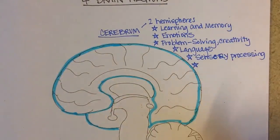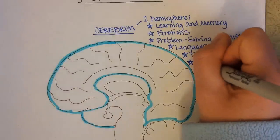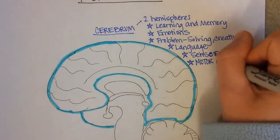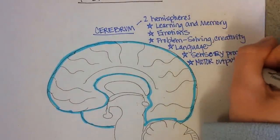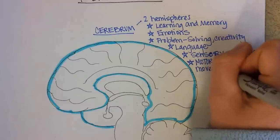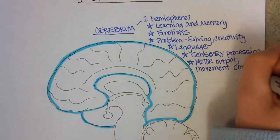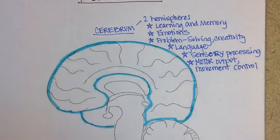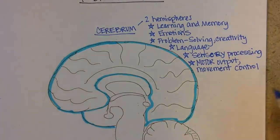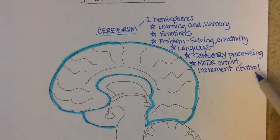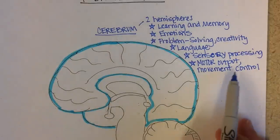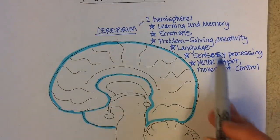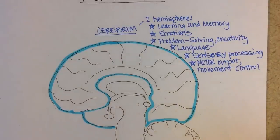Also in the cerebrum, motor output or movement control. So especially from this area right here called the precentral gyrus at the back of the frontal lobe, that's your motor cortex. It's important in initiating movement.